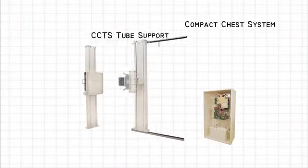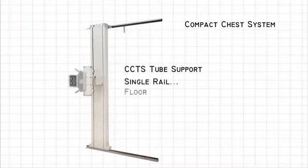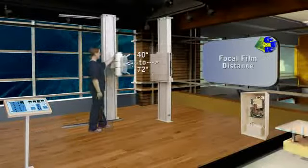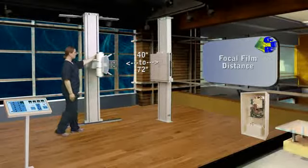The CCTS x-ray tube support is a single-rail floor-and-wall-mounted tube stand. With a floor-rail length of 53 inches, the focal film distance is 40 to 72 inches.